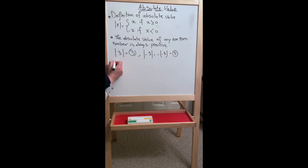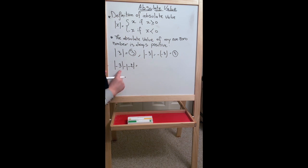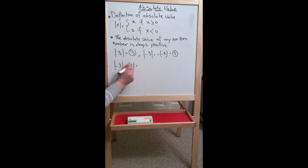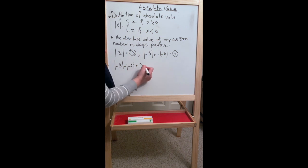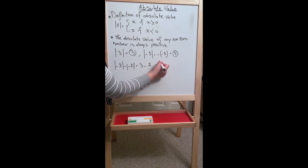Another example: the absolute value of -3 minus the absolute value of -2. To solve that, we start by evaluating each absolute value. Since -3 is negative, we change it to 3 and keep the minus sign outside. Since -2 is negative, we change it to 2. So we get 3 minus 2, which gives us 1.